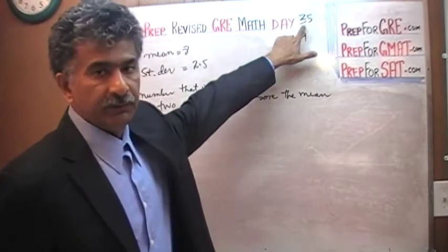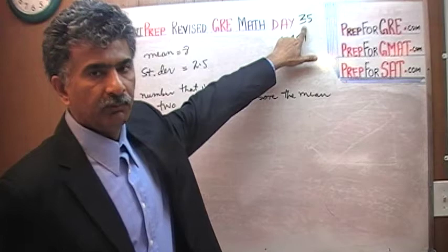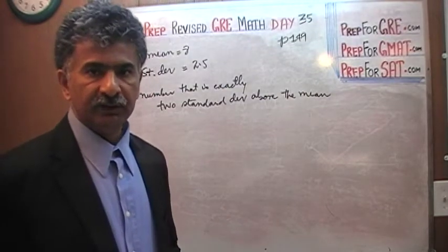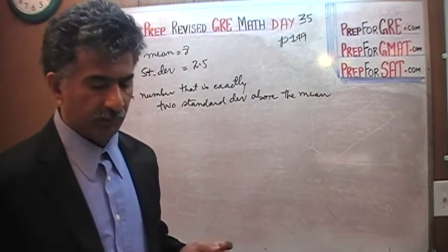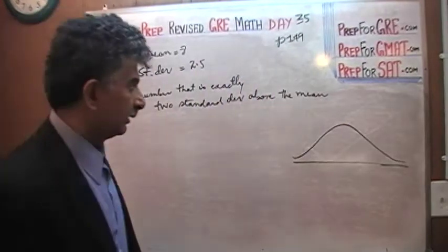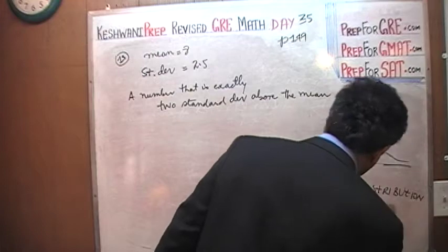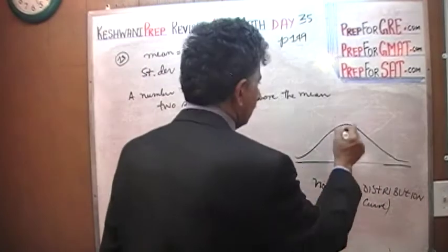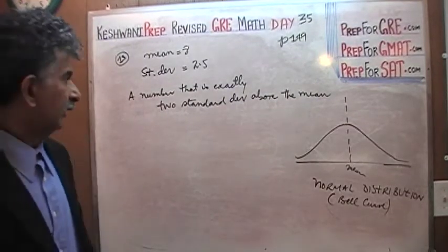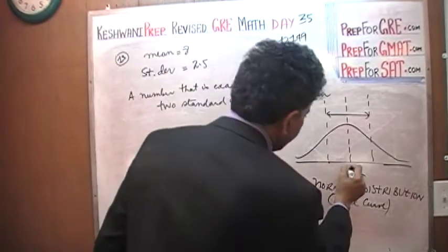2 standard deviation above the mean. We are talking about here a normal distribution. Tell you what, tomorrow on day number 36, if you are watching this video obviously watch the next video which is going to say day 36 on it and I'm going to do the entire video where I'm going to give you a brief introduction to the notion of normal distribution. Normal distribution is something that did not appear in the old exams, the old GRE, but these days in the new GRE they are putting more emphasis on statistics and you need to know a little bit about what is known as normal distribution. It looks like this. It is also sometimes referred to as the bell curve. Normal distribution, also known as the bell curve. So here is your mean, this is your mean.